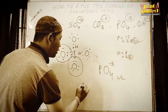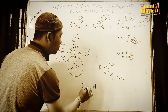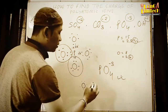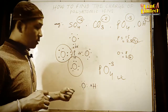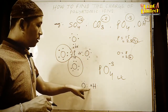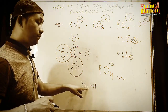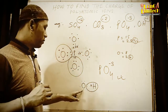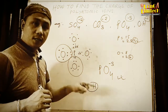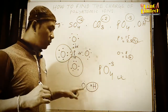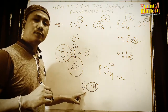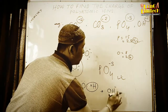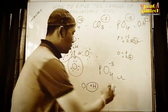For hydroxide: oxygen has six valence electrons. Hydrogen has atomic number 1 — just one electron. Oxygen shares one electron with hydrogen, gaining one electron toward its octet, but still needs one more electron to reach eight. Because oxygen requires one more electron, the charge of hydroxide OH is minus one.